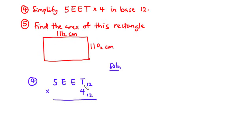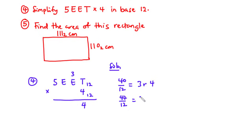T times 4 is the same as 10 times 4. So 10 times 4 is 40. 40 divided by 12: we have 3 remainder 4. 12 times 3 is 36. 40 minus 36 is 4. So we write the remainder here and carry on 3. E is 11. So 11 times 4 is 44, plus 3 is 47. 47 divided by 12 is 3 remainder 11. 12 times 3 is 36. 47 minus 36 is 11. So instead of writing 11, we are going to write E. And then we carry on 3.